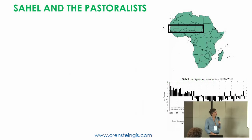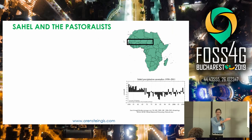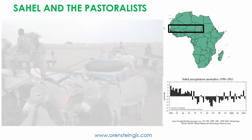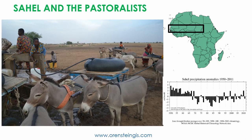To give you a bit of context, we're talking about herders in the Sahelian part of West Africa. This is the band that stretches from Senegal to Chad. It's very dry, it's very big. You can see on the right side here precipitation anomalies, showing that rainfall is getting more and more erratic. For people like this — this is a picture of a Fulani family in Northern Senegal — finding water and pasture can be particularly difficult.